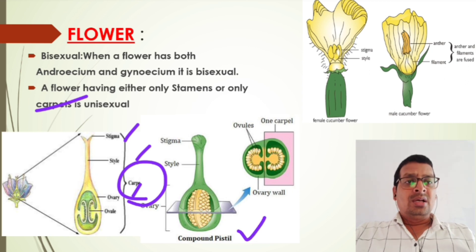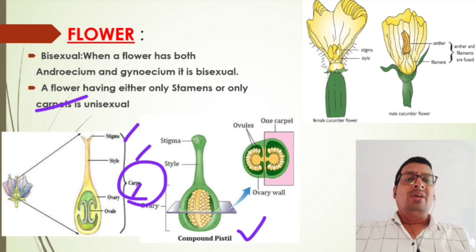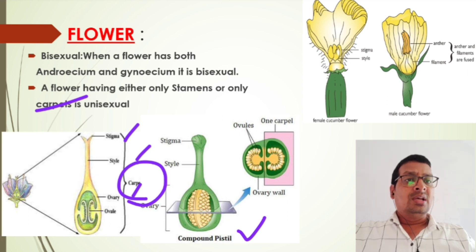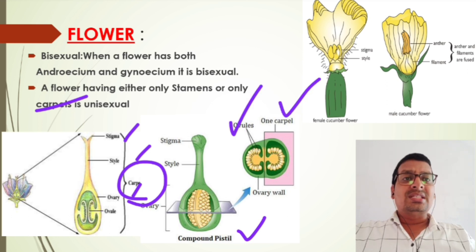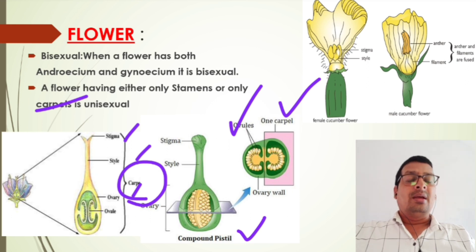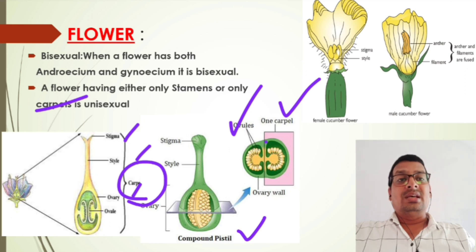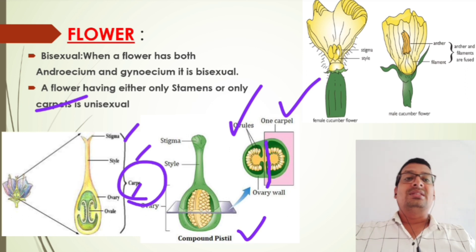A compound pistil is shown here. When taking the transverse section of the ovary, it shows two distinct carpels. This type of carpel arrangement is known as bicarpellary. Since these two carpels are fused to each other, the ovary is syncarpous.